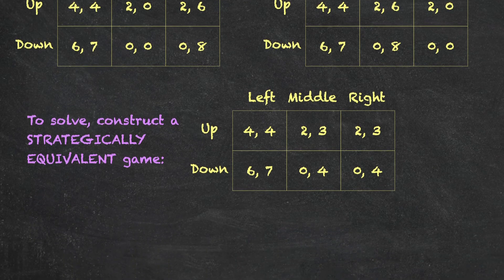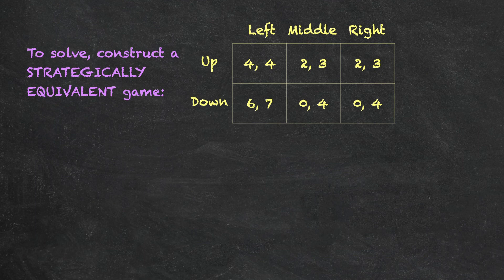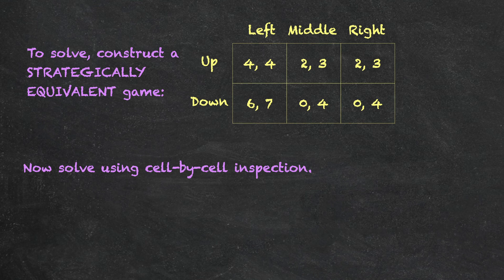Now we can use the concept of Nash equilibrium to solve this game. The technique I like to use is called cell-by-cell inspection — please look it up if you haven't heard of it. You are guaranteed to find every Nash equilibrium in pure strategies using this technique. Starting from Anne's point of view: if Bob is going to choose left, Anne has a choice between up and down with payoffs four or six. Six is better, so Anne's best response when she believes Bob will choose left is to choose down. Let's underline that payoff of six.